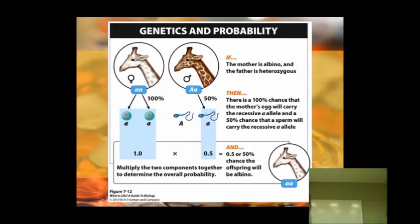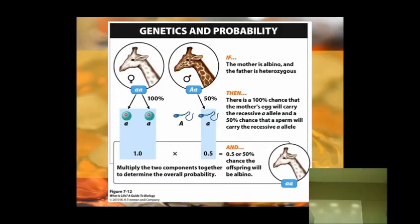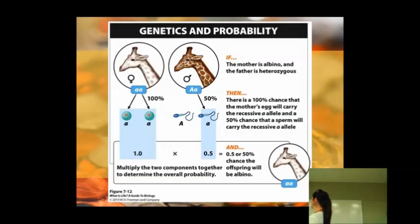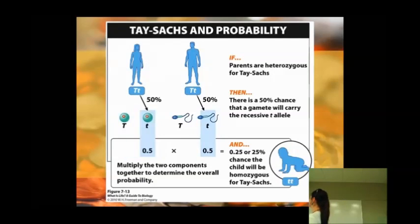So if we changed those parents around and we had a different combination of genotypes, there would be different probabilities of having different offspring. But I wanted to give you at least this one example.